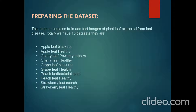For preparing the dataset, training and test images of the plant leaves are extracted from the website Kaggle. We extracted a total of 10 datasets of five different leaves: the apple leaf (healthy and unhealthy), the cherry leaf (healthy and unhealthy), and likewise grape, peach, and strawberry have been extracted from the website.